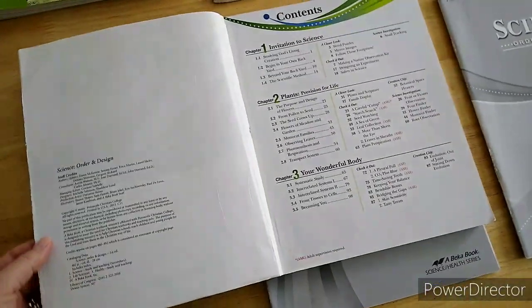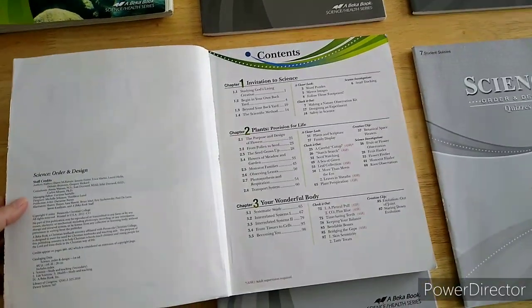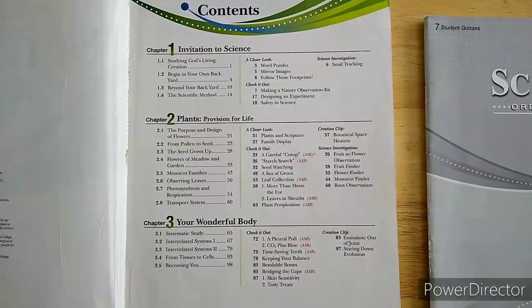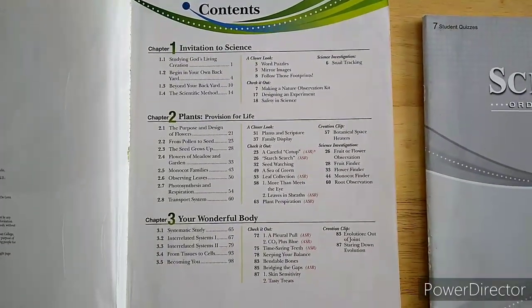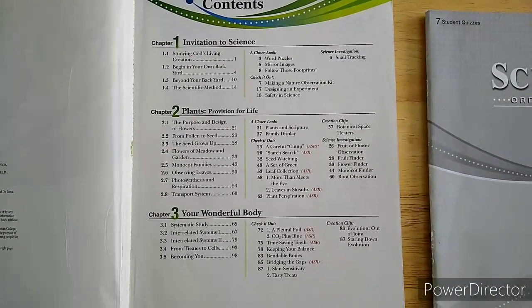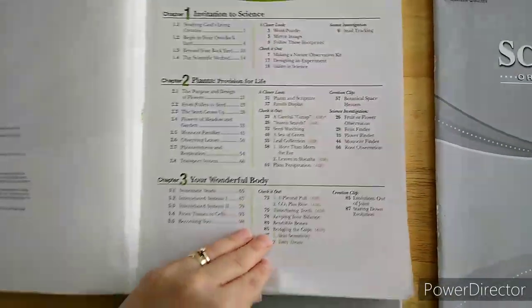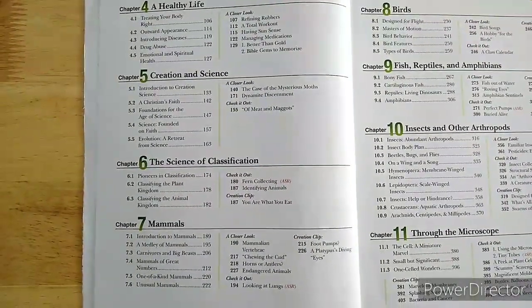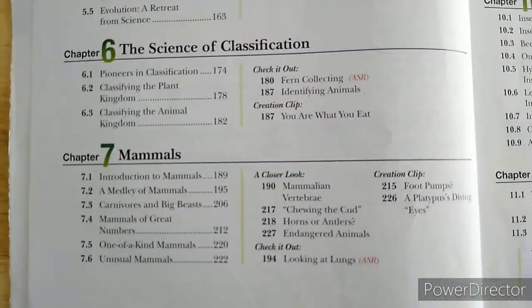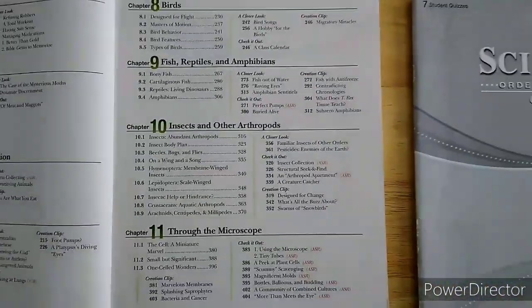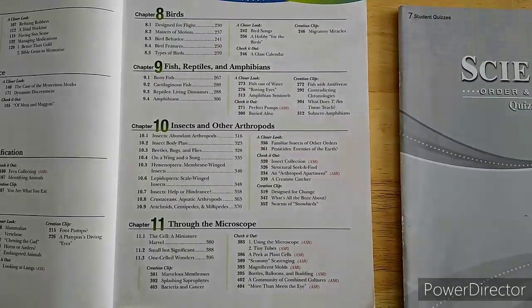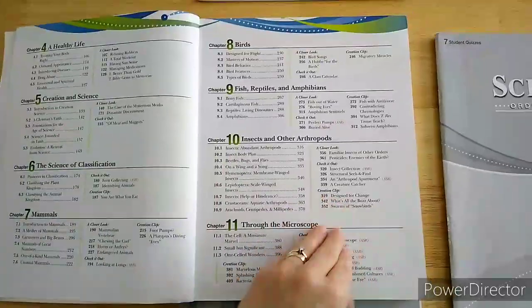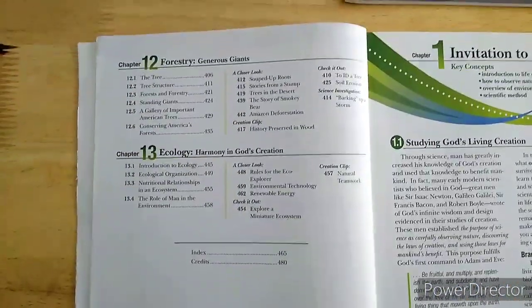This one was copyrighted 2010. It does not have an edition on it that I see. You can pause the video if you want, but this is the table of contents. The main topics it covers are an invitation to science, then plants and your wonderful body, a healthy life, creation and science, the science of classification, mammals, birds, fish, reptiles, amphibians, insects and other arthropods, through the microscope. The last two chapters are forestry and ecology.